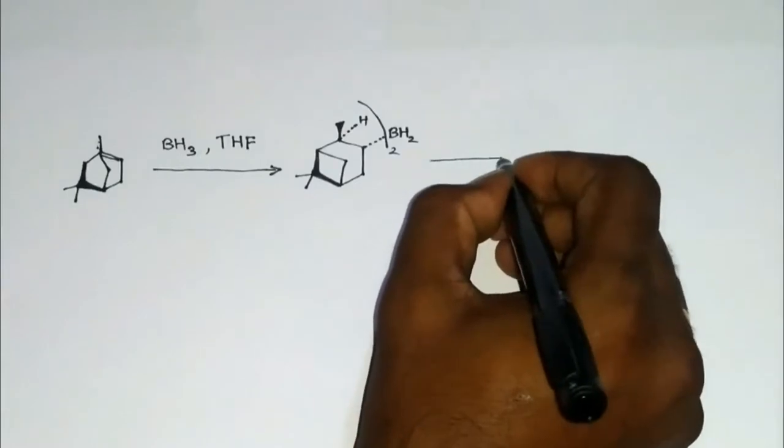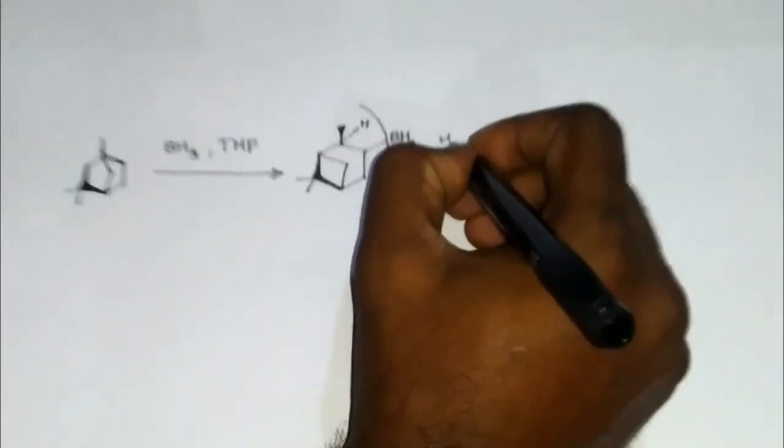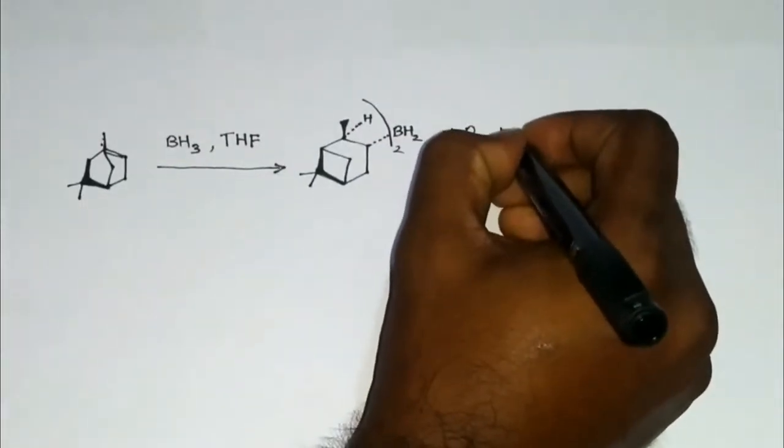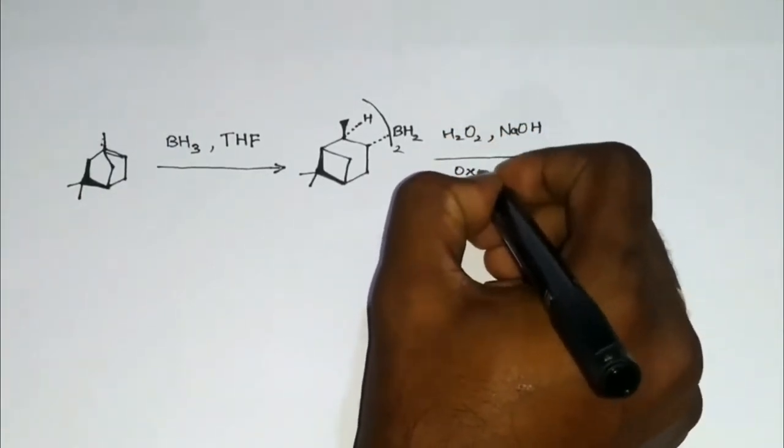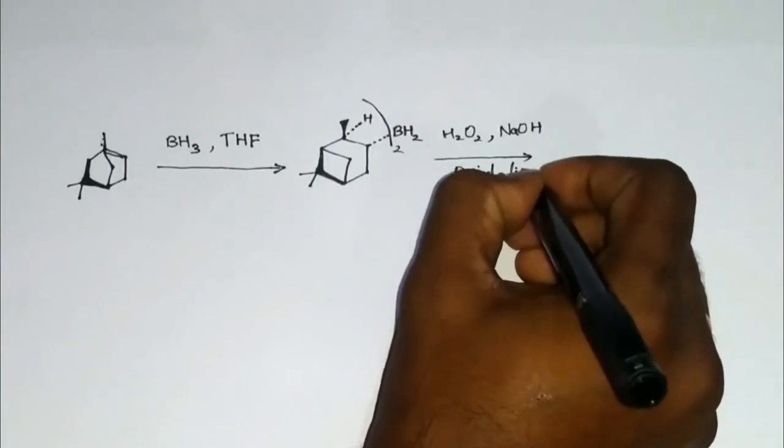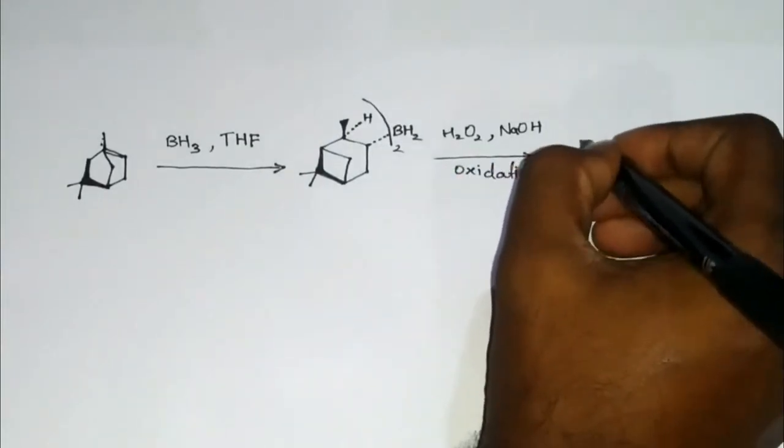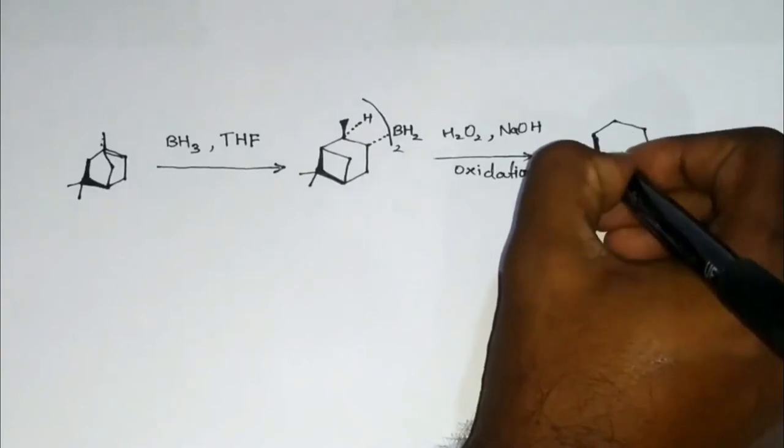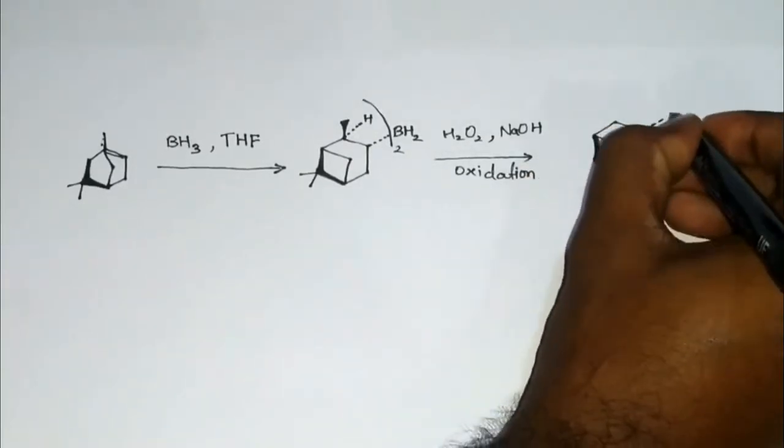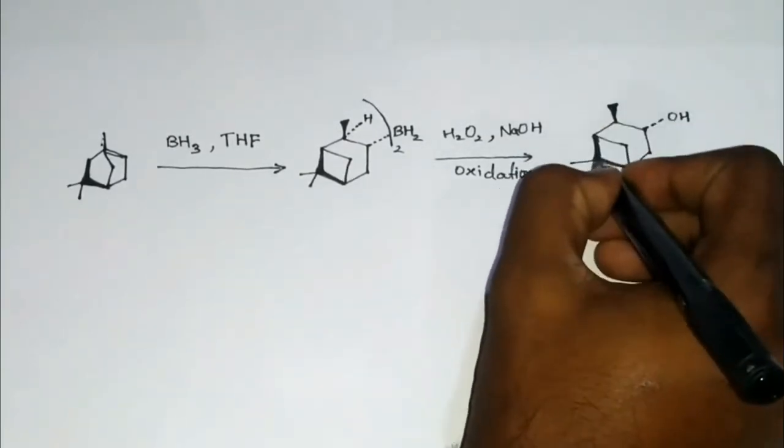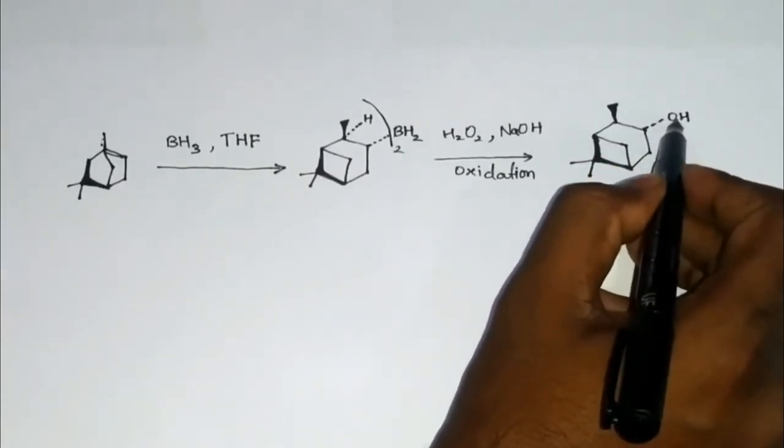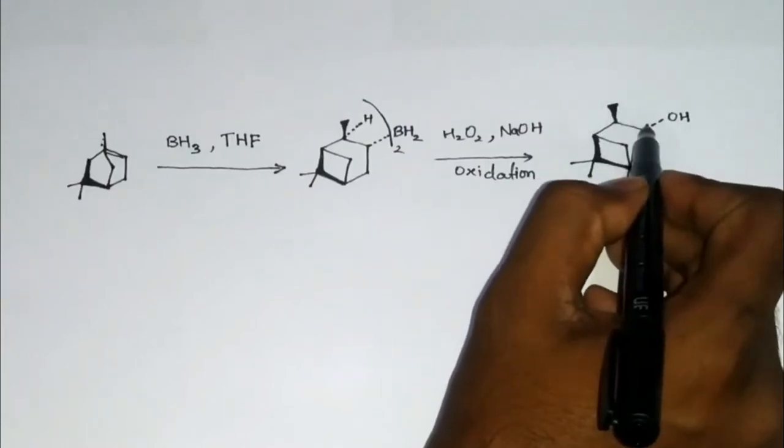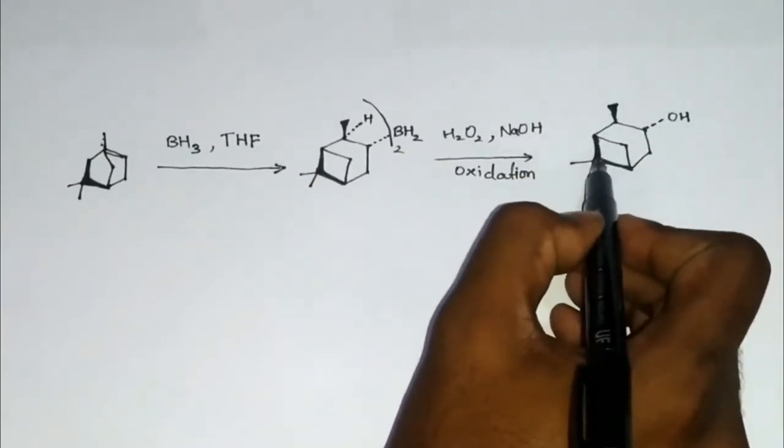The next set of reagent is hydrogen peroxide NaOH which will cause the oxidation and the product will be the methyl group and OH group is anti with respect to each other. This group and this group, they are at the same side of the plane of the paper.